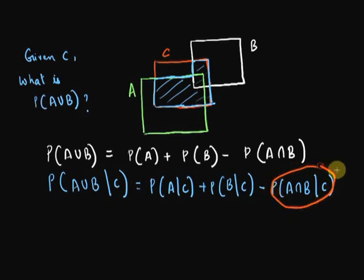But there's one thing we don't quite know. Conditional probability of the intersection of two sets. How do you find that?